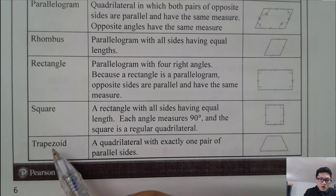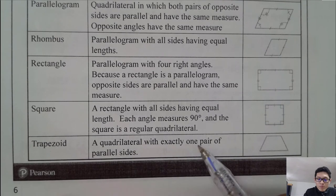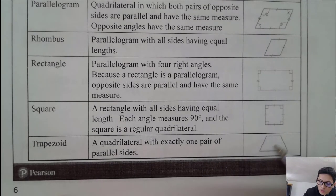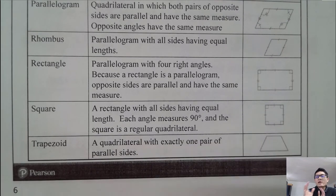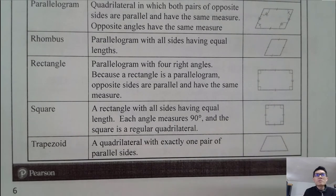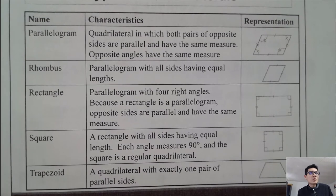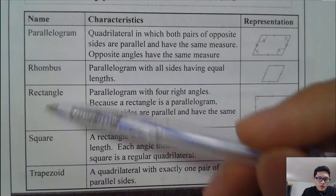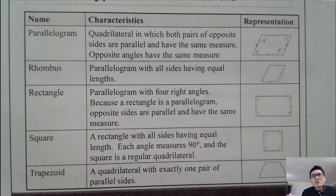A trapezoid is also a quadrilateral with exactly one pair of parallel sides — only one pair, the top and bottom. The other two sides are not parallel. So we have a total of five special quadrilaterals, each with five special names and characteristics we are learning in this section.